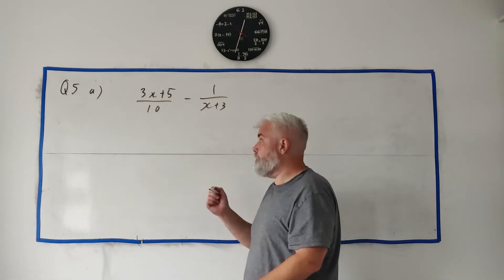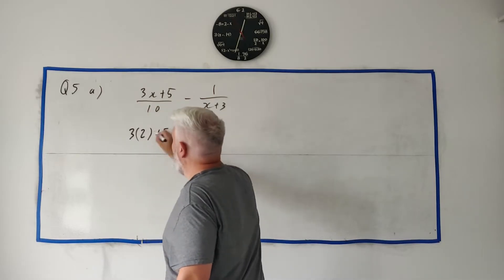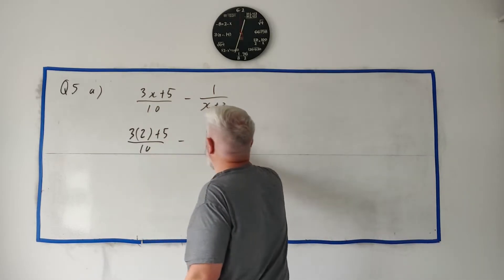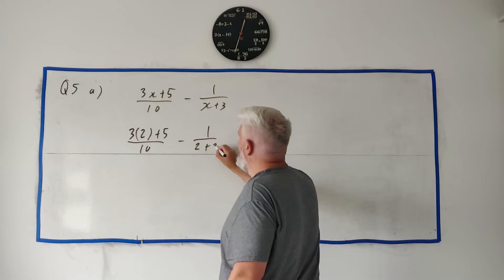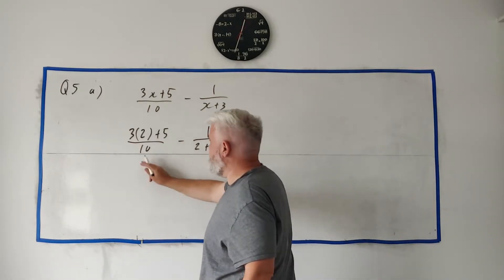So let's just go ahead and put 2 in. Let's rewrite it: 3 times 2 plus 5 over 10 minus 1 over 2 plus 3. Let's clean this up as much as we can: 3 times 2 is 6, 6 plus 5 is 11 over 10 minus 1 over 5.